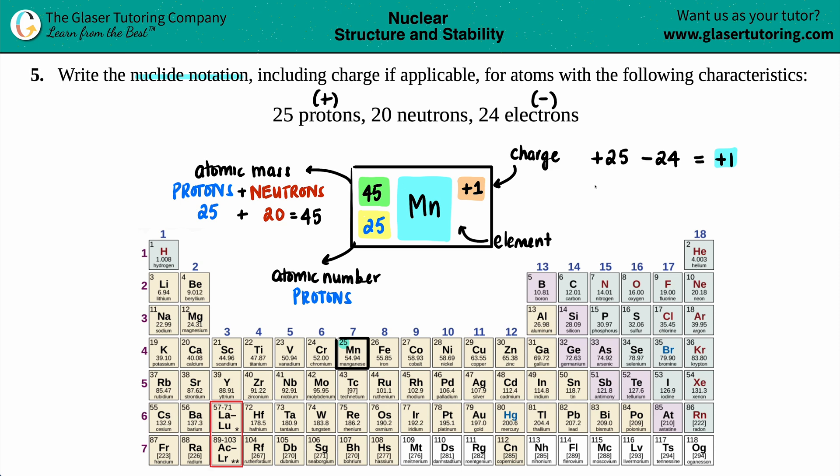And that's that. So you got a 45 on top, you got 25 on the bottom, Mn for manganese, and this one has a plus one charge. And that's it.